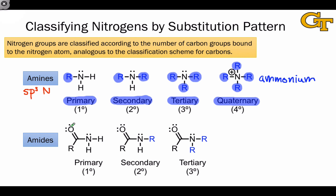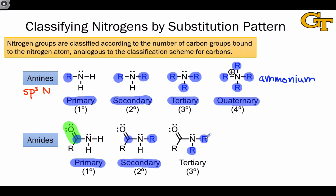Amides are similar to amines, but one of the groups attached to nitrogen is a carbonyl group, so we can use similar terminology to classify amides as well. An amide that bears only the carbonyl group with two other hydrogens is referred to as primary, analogous to the primary amine. An amide that contains the carbonyl group along with one other carbon group is referred to as secondary. And an amide that lacks hydrogens and has two carbon groups in addition to the carbonyl group is referred to as tertiary.